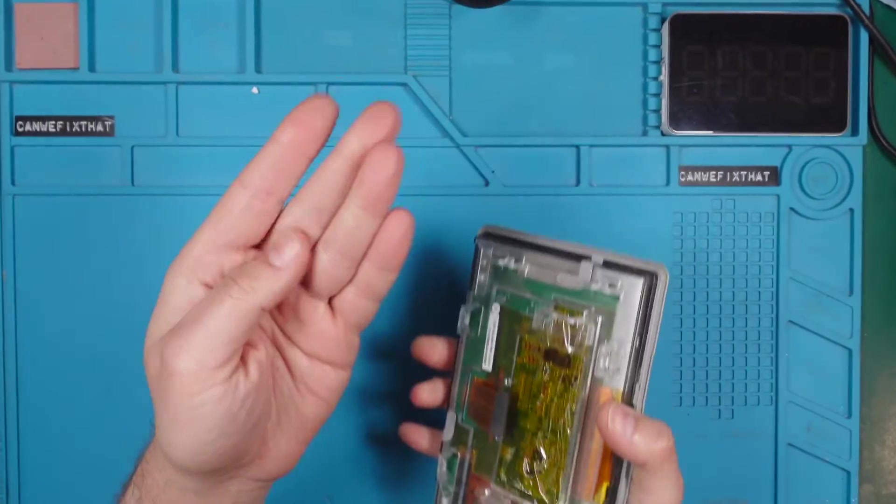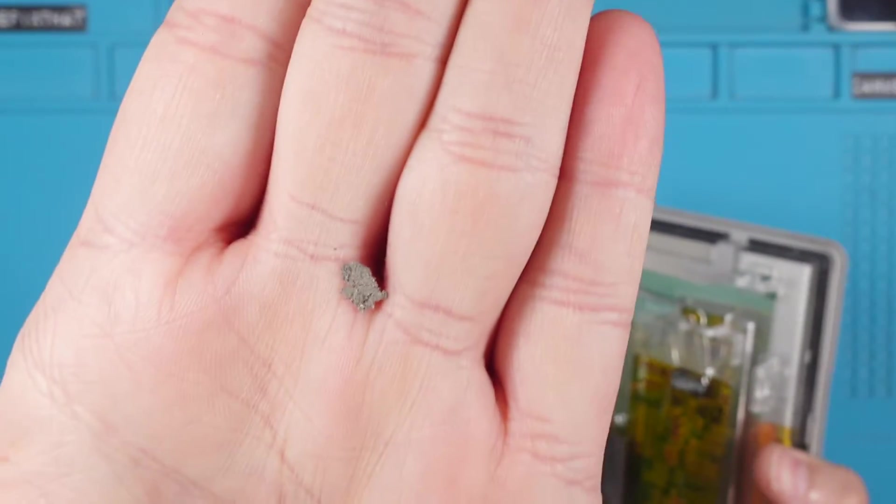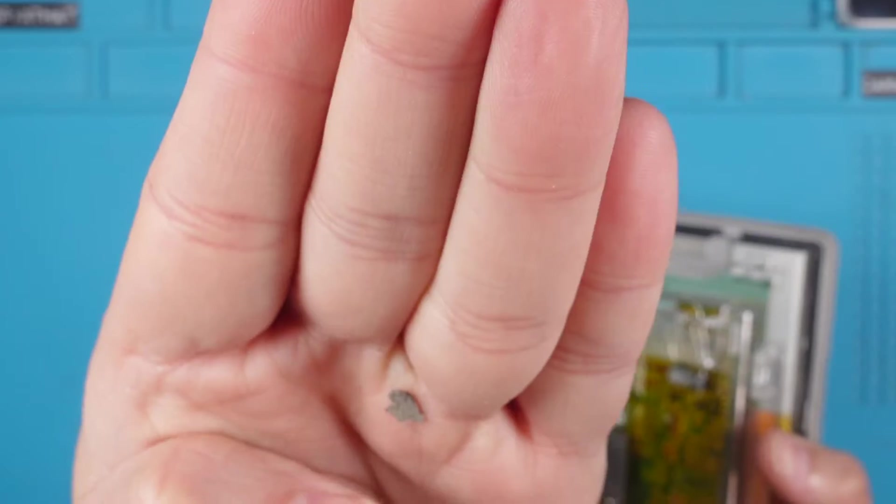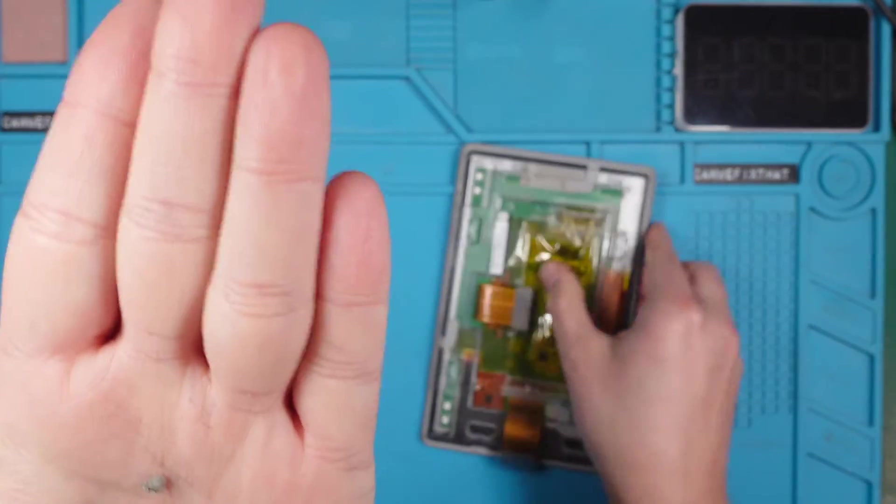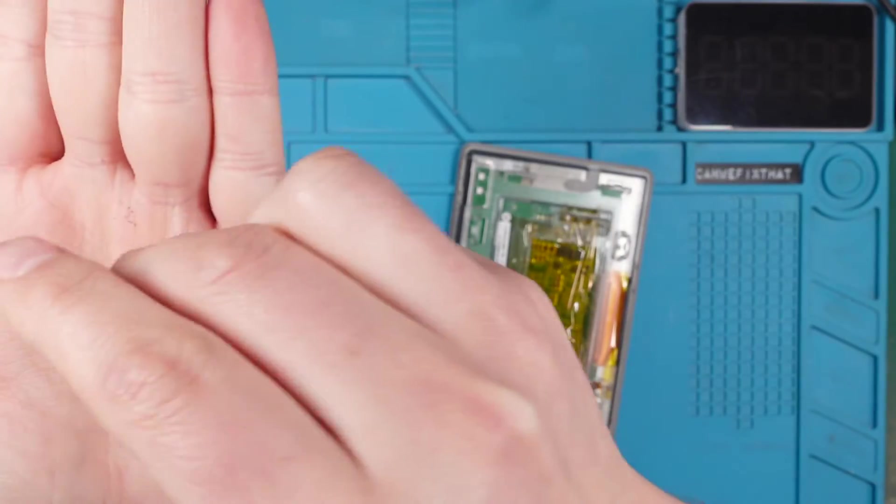But wait a moment, what is that inside? It looks like dry soil. How the heck did this end up in my replacement screen? If anyone has a good explanation, drop a comment. I'm very curious about your ideas.